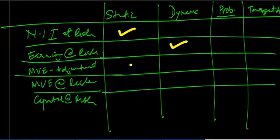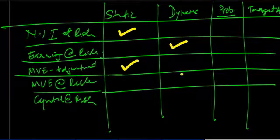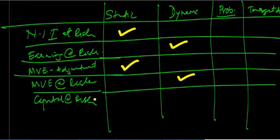MVE adjustment is a static report because you start off with a preset, pre-given rate shock that then goes into your calculations. MVE at risk is a dynamic report, and capital risk, the same thing as MVE at risk, is also a dynamic report.